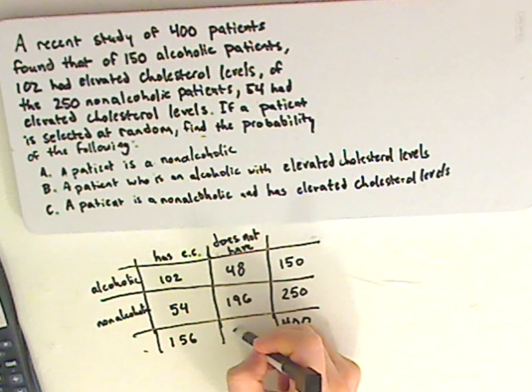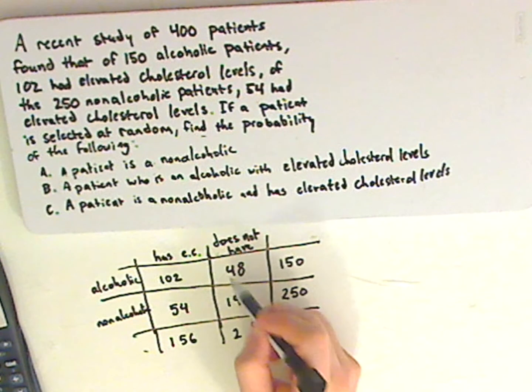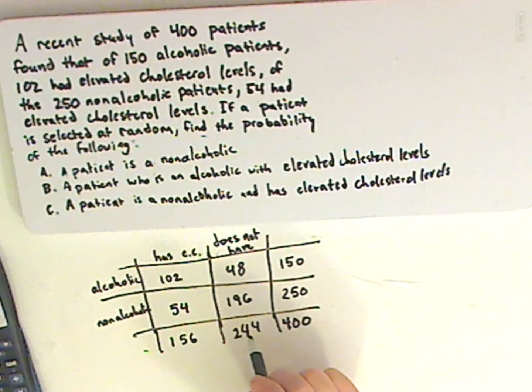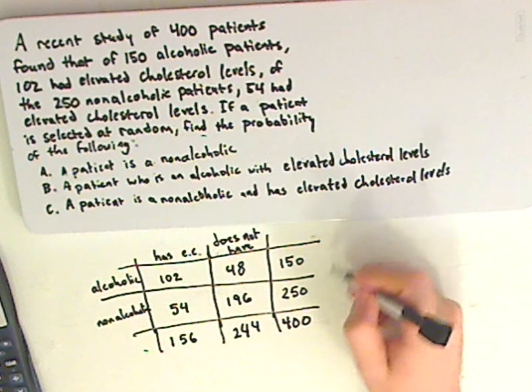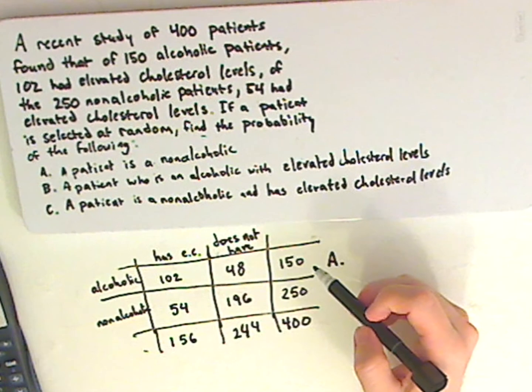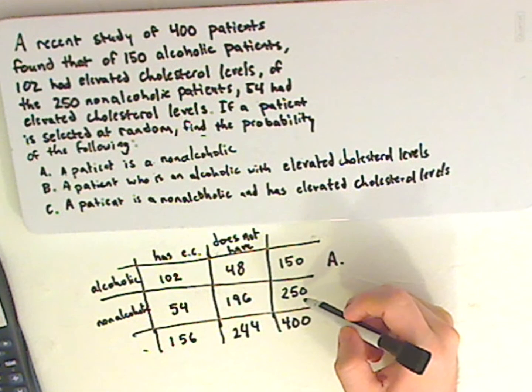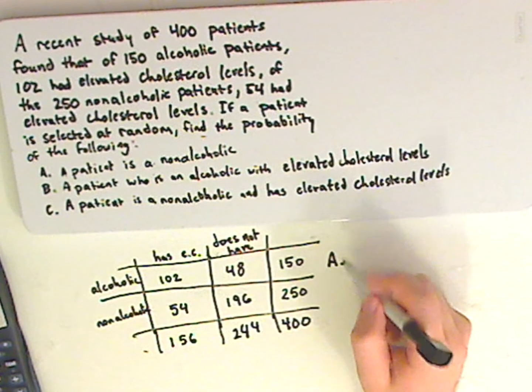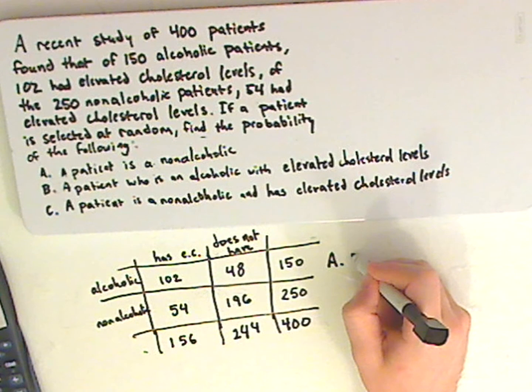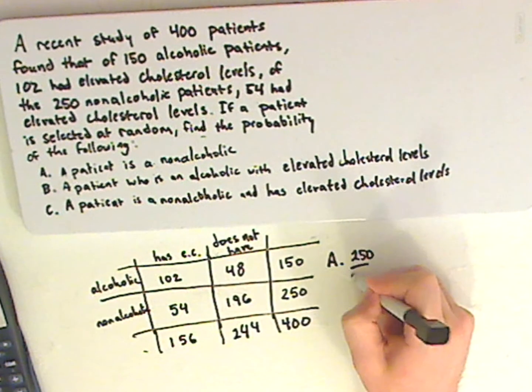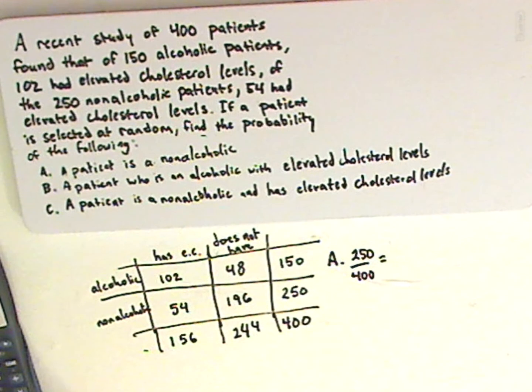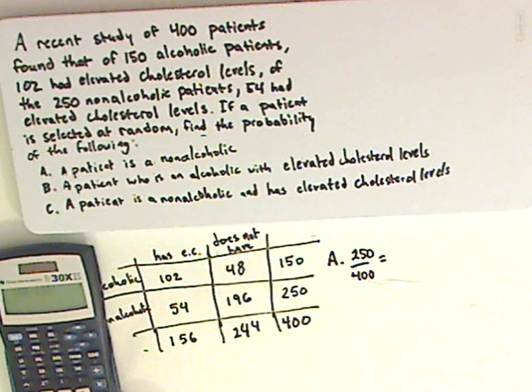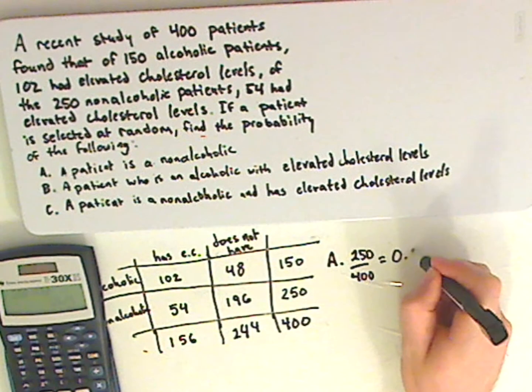So when I add these two together I get 400. So that works. Now how do I find A? A patient is a non-alcoholic. It's always frequency, the desired frequency, over the total. So here, it's non-alcoholic, which would be 250 out of 400. Now type that into your calculator. So 250 divided by 400, and I get 0.625.